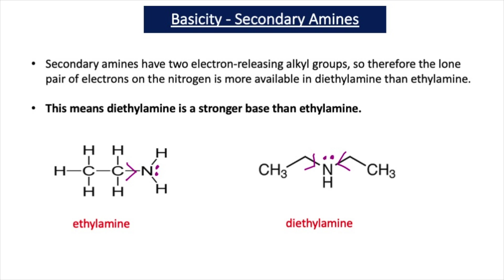Now let's look at the basicity of secondary amines. Secondary amines have two alkyl groups attached to the nitrogen. Alkyl groups are electron-releasing groups — they push electrons onto the nitrogen. So if you have two alkyl groups, as in secondary amines, compared to the one alkyl group in a primary amine, there is more push of electrons onto the nitrogen and the lone pair is more available. Therefore secondary amines are stronger bases than primary amines. So diethylamine is a stronger base than ethylamine because two alkyl groups are pushing electrons onto the nitrogen in diethylamine compared to one in ethylamine.